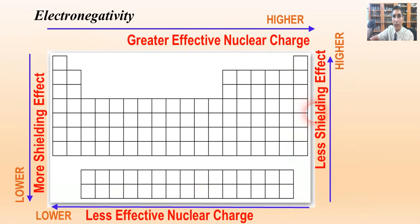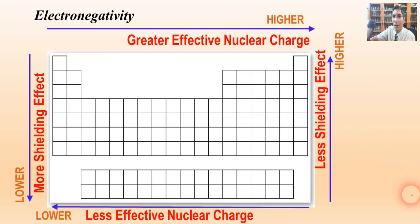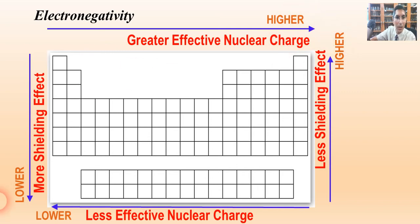Let's take a look at the overall trend. This looks very similar to a graphic we saw in the last video and in lesson four. Electronegativity tends to be higher in the top right-hand corner and lower as you go toward the bottom and left of the table.